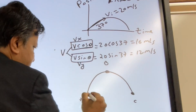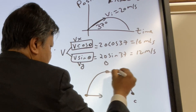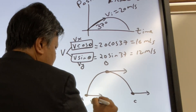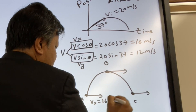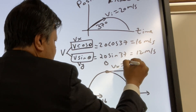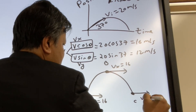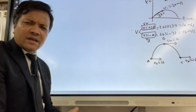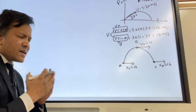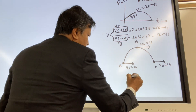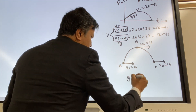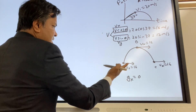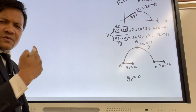Vx is constant — 16, 16, and 16 at all three locations. Why is Vx constant? Because acceleration due to gravity at the x direction is zero, so the velocity at the x direction remains constant.